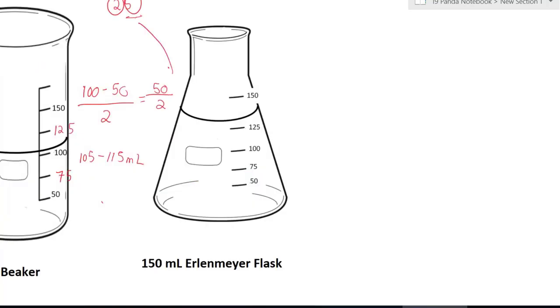Last one. 150 milliliter Erlenmeyer flask. Same thing, you have to find the difference. So 150 minus 125 divided by the number of increments, which is 1. So 150 minus 125 will give you 25 over 1, which is 25.